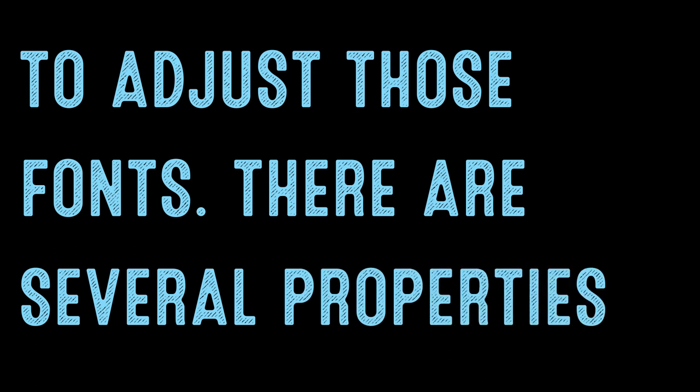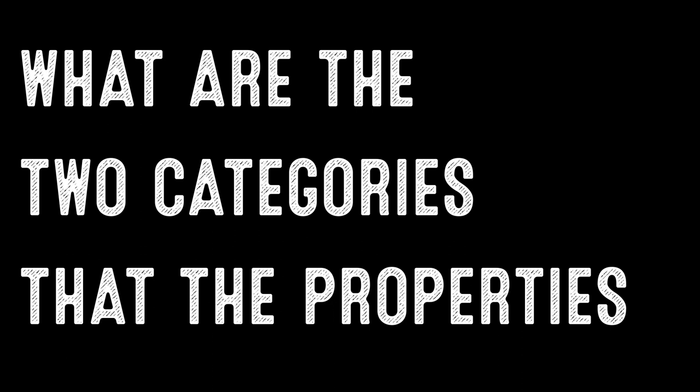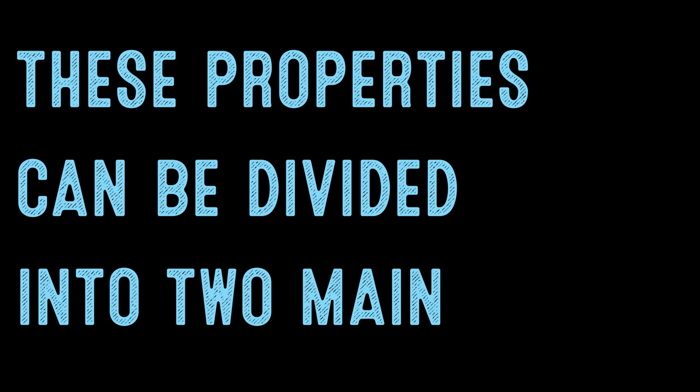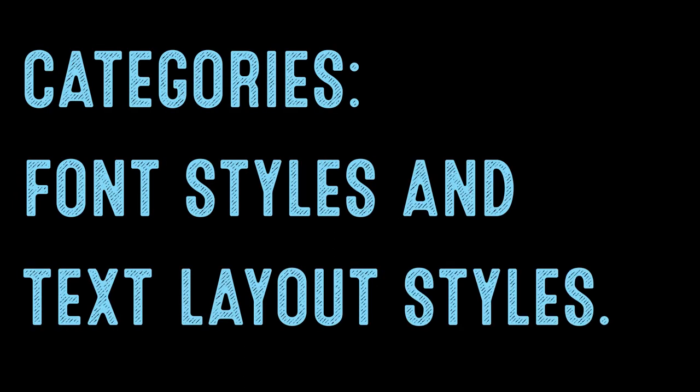There are several properties that affect the typography for web. What are the two categories that the properties can be divided into? These properties can be divided into two main categories: font styles and text layout styles.